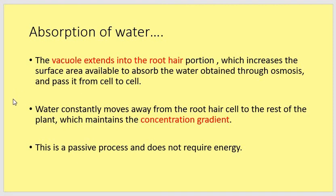The vacuole extends, which also increases the surface area available in the vacuole so that more water can move into it. The vacuole is very close to neighbouring cells and water moves from vacuole to vacuole through the plant. Because water is constantly being used elsewhere in the plant, it is constantly moving away from the root hair cell, maintaining the concentration gradient. This means there is always more water outside the root hair cell than inside, so water is constantly taken up by osmosis. Because of the concentration gradient, this is a passive process and does not require energy.